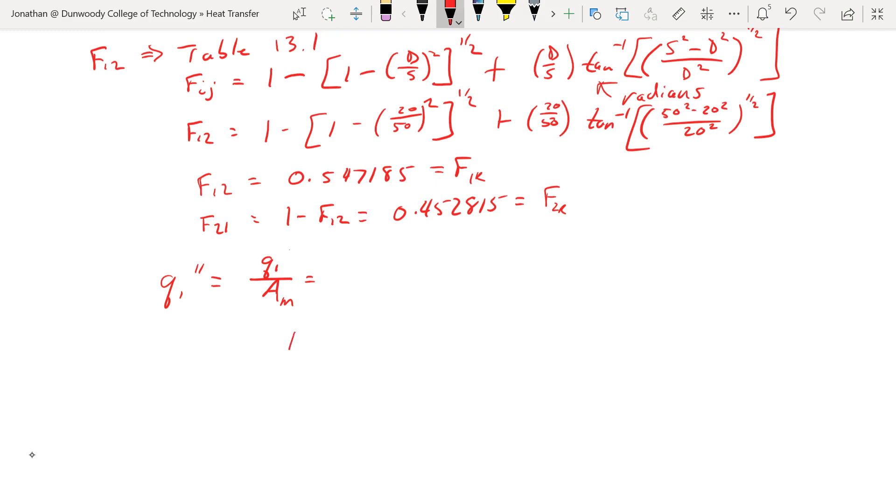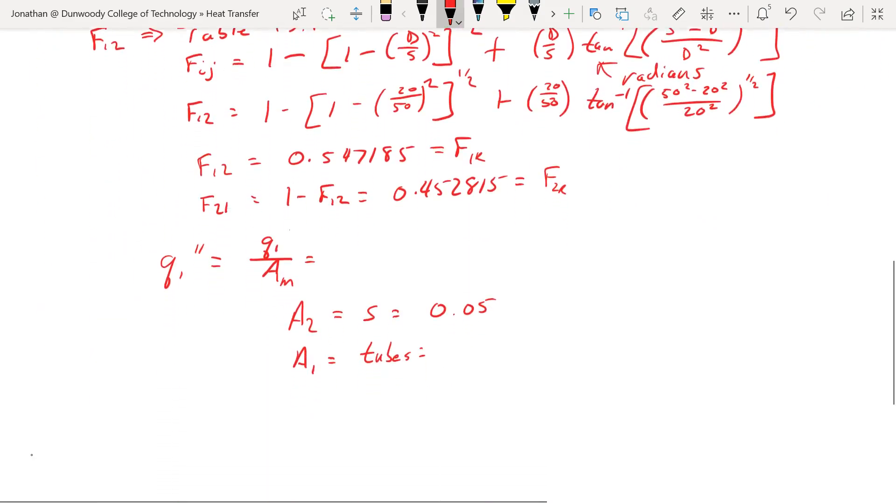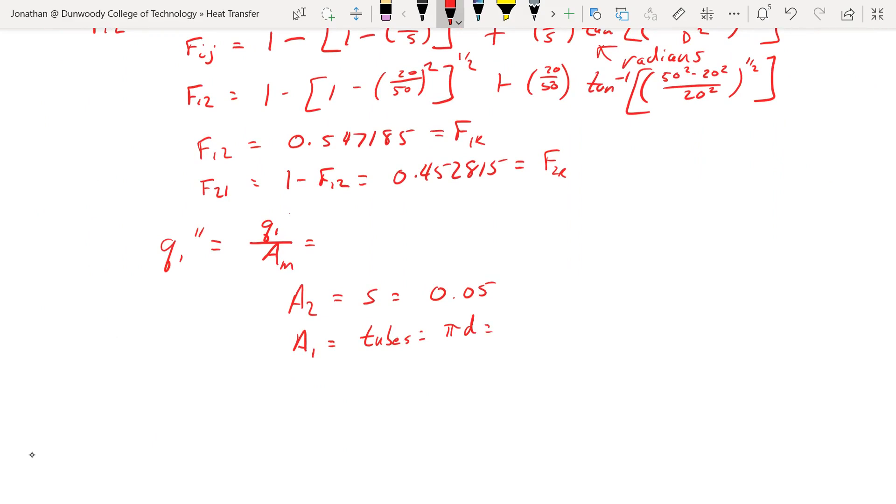So we're going to have for the material, A2, it's going to be S, so 0.05 meters, times whatever length or depth into this page we're doing. A1, it's a tube surface, area of the tubes. If I look up here, I've got pi times D over 2 plus pi times D over 2, or pi D, one whole circumference of that guy, equals 0.02 times pi. And our back wall, AR, is the same as S, equals 0.05.